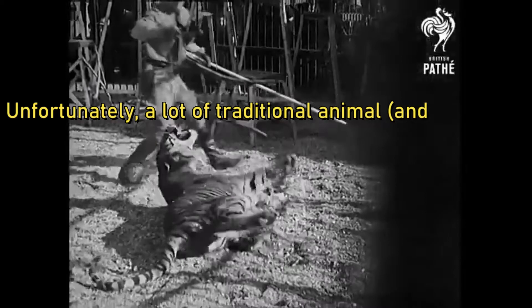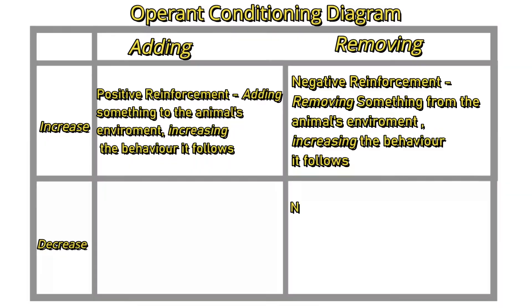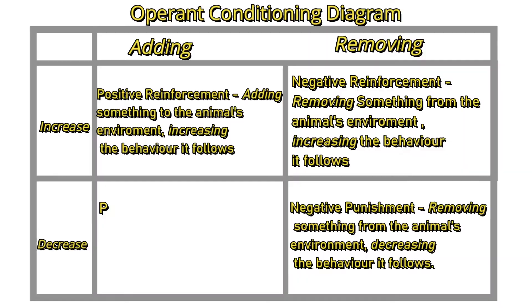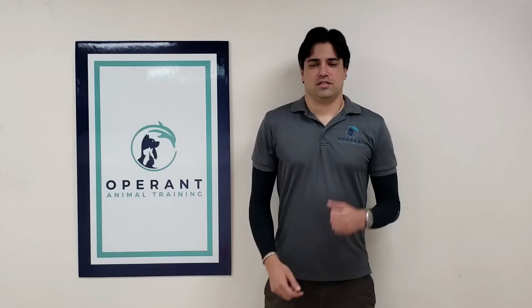Negative reinforcement is not punishment. Punishment comes after a behavior — you can't avoid it by changing your actions. Think of negative like math: subtracting something from the scenario. Unfortunately, a lot of traditional animal and human training is done entirely by negative reinforcement — essentially working to avoid or to make something unpleasant stop. Negative punishment is removing something from the animal's environment, decreasing the behavior it follows — for example, ending the training session, removing the opportunity for reinforcement, following an incorrect behavior. Positive punishment is adding something to the animal's environment, decreasing the behavior it follows — for example, striking someone for doing something you don't like.